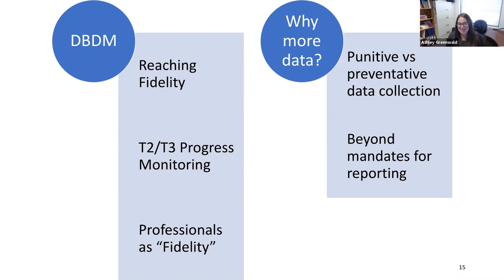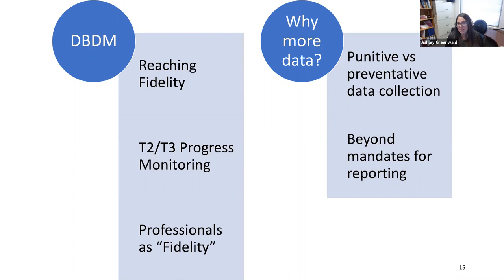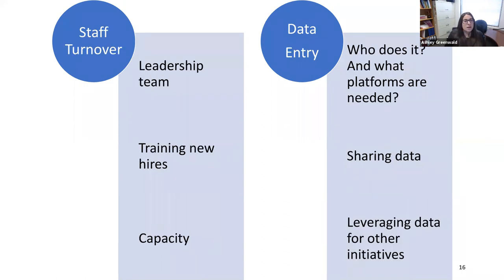Why collect more data? Facilities already collect tons of data, but it's often for reporting mandates — reported once or twice a year. PBIS data is used to drill down and identify areas of need and opportunities for change. The difference between punitive and preventative data: punitive is incident tracking alone; preventative also tracks incidents by location, staff, time of day, and youth progress points, helping systems be more cohesive.